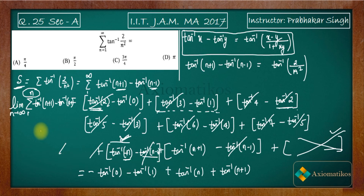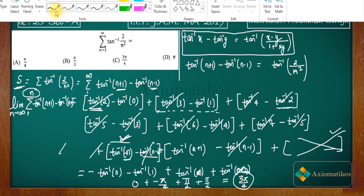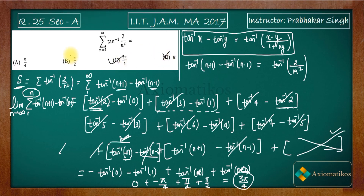As n → ∞, both tan⁻¹n and tan⁻¹(n+1) approach π/2. tan⁻¹0 = 0, and tan⁻¹1 = π/4. So S = π/2 + π/2 - 0 - π/4 = 3π/4. This means the third answer option is correct, and all remaining options are false.